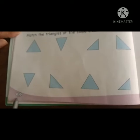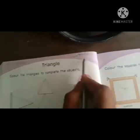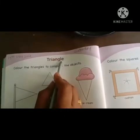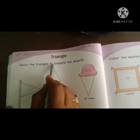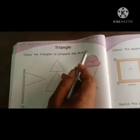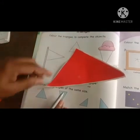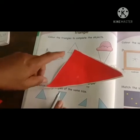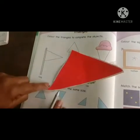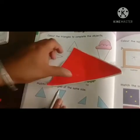Now open book page number 20. Today's date is 15th May 2021 and it is Saturday. Triangle. Color the triangles to complete the objects. Which shape is triangle? Three sides and three corners.